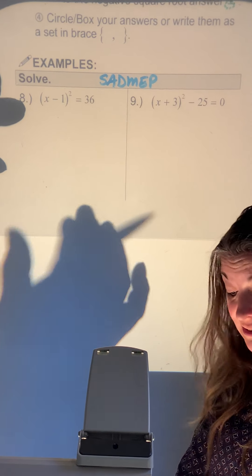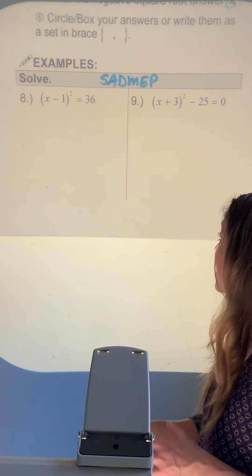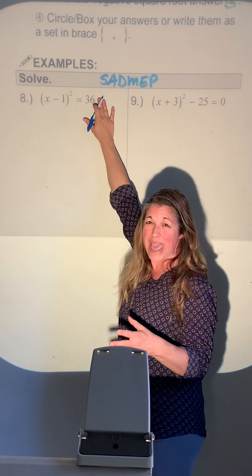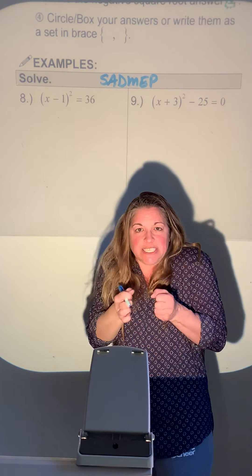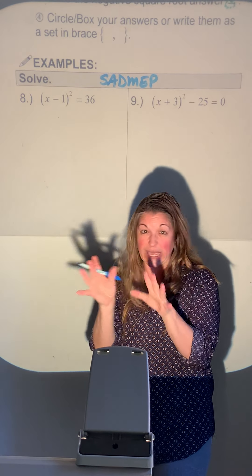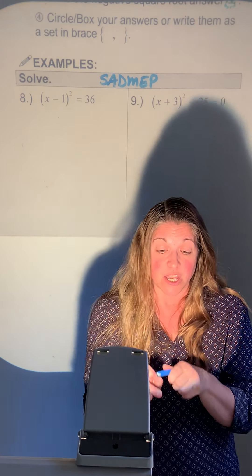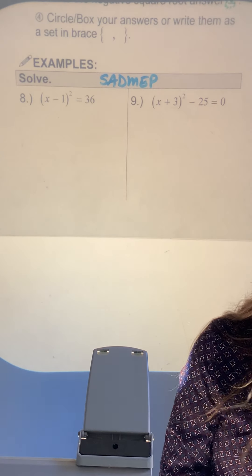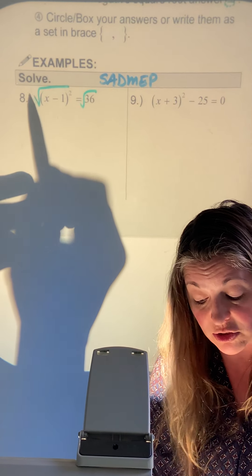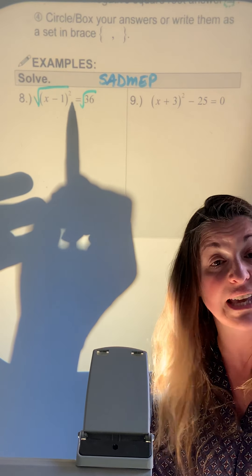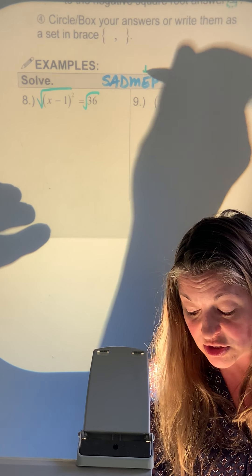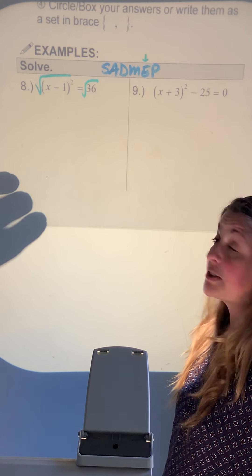For number 8, there's a minus 1 inside the parentheses, so it's protected — you can't just add it out. Think: parentheses equals protected. There's nothing being added or subtracted outside the parentheses, so we can jump straight to the E for exponent.